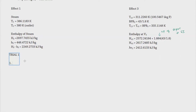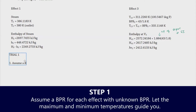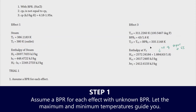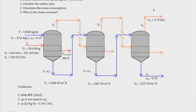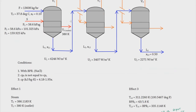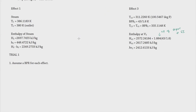The first step is to assume a boiling point rise for each effect. The BPR for the third effect is already obtained: BPR3 = 43/1.8, since we have a given value. But for the second and first effects, we have no direct way to get them. In other problems, the BPR is represented in terms of x, making it simply a mass fraction.